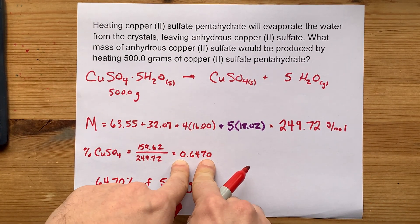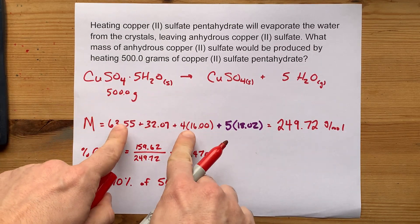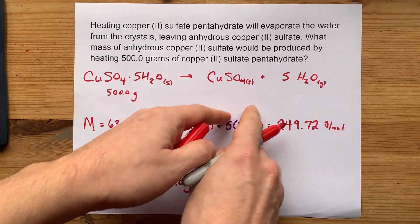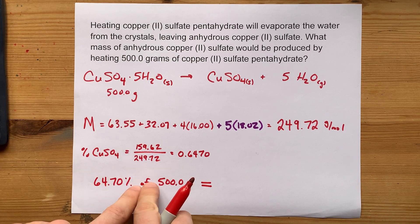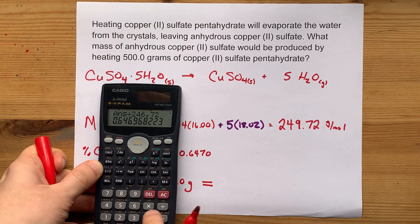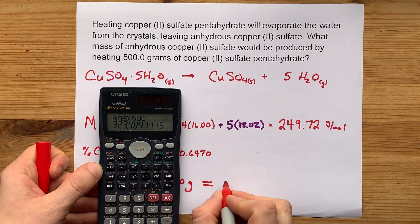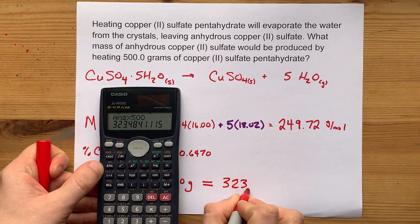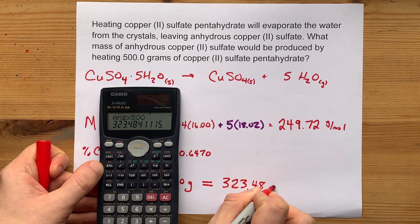64.7% of the whole compound was copper sulfate. So when the water leaves, 64.7% of your starting mass is what's left over. Here, take it, times it by 500, I end up with 323.48 grams.